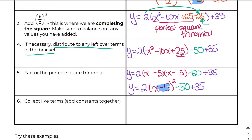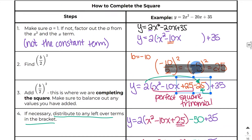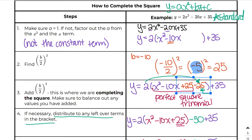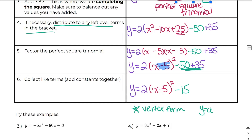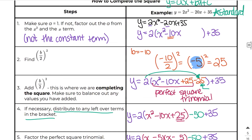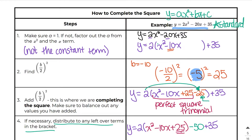Lastly, collect like terms — add your constants together. I end up getting y equals 2 times (x minus 5) squared, then put the two numbers together to get minus 15. And now we have completed the square. By completing the square, we are now in vertex form. We started in standard form — y equals ax squared plus bx plus c — and now we're in vertex form, y equals a times (x minus h) squared plus k. We haven't changed anything; this equation is equivalent to the original.